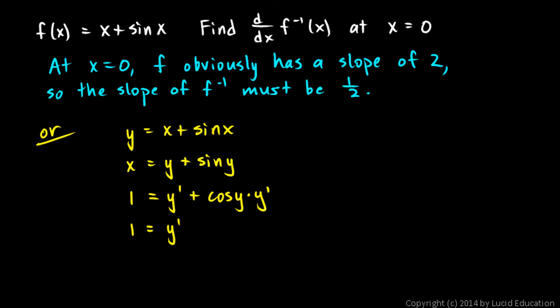So on the right, let's factor out a y prime, and we have 1 plus cosine y as the other factor. So y prime is equal to 1 over 1 plus cosine y.